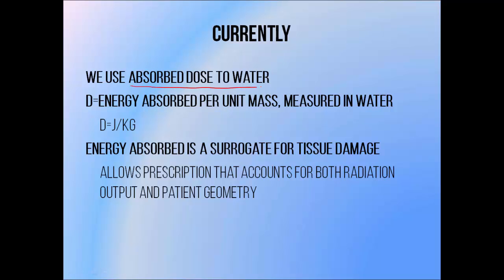At the moment we use absorbed dose to water, which is defined in terms of joules per kilogram. It's the amount of energy absorbed per unit mass of material. We normally perform our absolute dose measurements in terms of grey in water, because of convenience and the fact that it has similar radiation interaction properties to human soft tissue. The 'to water' part of absorbed dose to water is a lot more confusing than it really needs to be - I'm going to cover it in more detail in a future tutorial - but suffice to say for now that it's a measurement of energy absorbed per unit mass of water measured in a water phantom. We use it as a surrogate for tissue damage, so more dose generally means more ionization in a tissue and therefore more damage. This allows us to determine dose inside a patient, independent of the machine that's used to deliver it, and the geometry of the patient too.